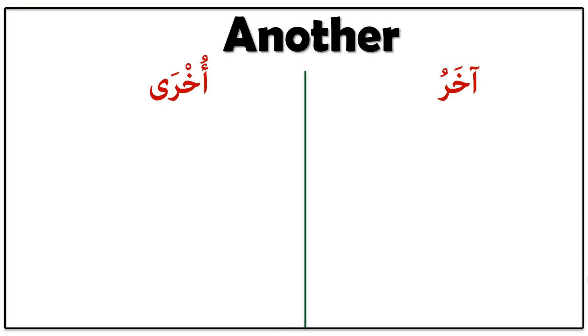'Another' in Arabic means 'akharu' or 'ukhra'. We use 'akharu' for masculine (mudhakkar) and 'ukhra' for feminine.